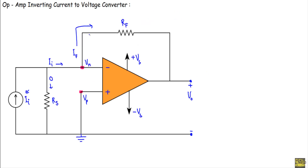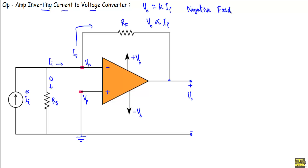This is the circuit structure of the operational amplifier inverting current-to-voltage converter circuit. From the circuit we will show output voltage VO equal to K·II, or VO is directly proportional to the input current II. The output is connected to the inverting terminal through this feedback resistor RF, so the op-amp will be in negative feedback. Due to negative feedback, VP will be equal to VN.